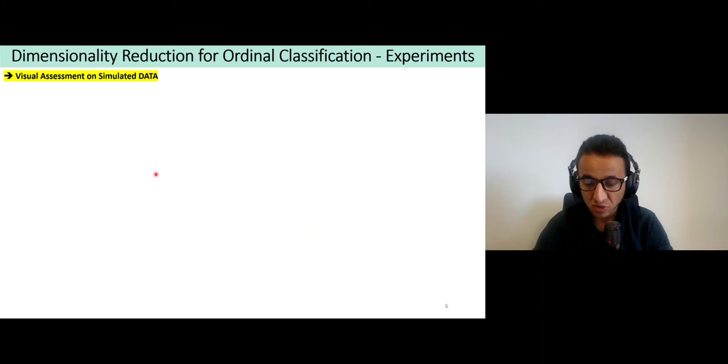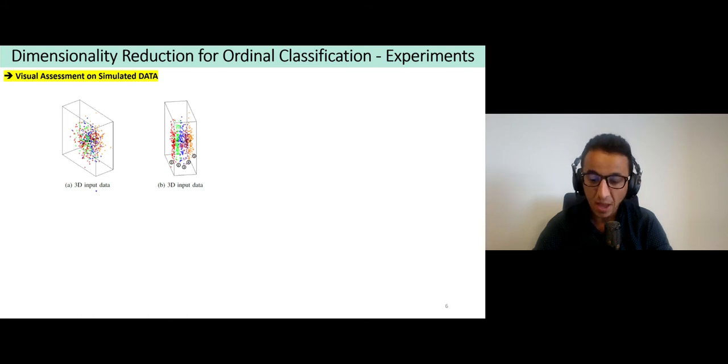For the assessment we propose a visual assessment to compare BVP to the existing dimension reduction techniques. We demonstrate this on a first synthetic data set in 3D composed of five classes. We have a first view and the second view, which corresponds to the view obtained by a rotation of the 3D model. We can assume that this is the view obtained by the user who searched for the best and optimal view of ordinality. When we look at the result of BVP we can see that it succeeded at preserving the ordinality in 2D while projecting from 3D.